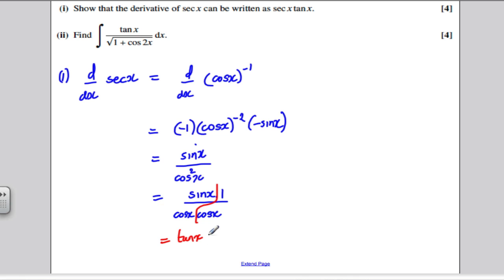And 1 over cos x is sec x. And hence, the derivative of sec x is sec x tan x, or tan x sec x, whichever way around you want to write it. And hence we've done the first part.